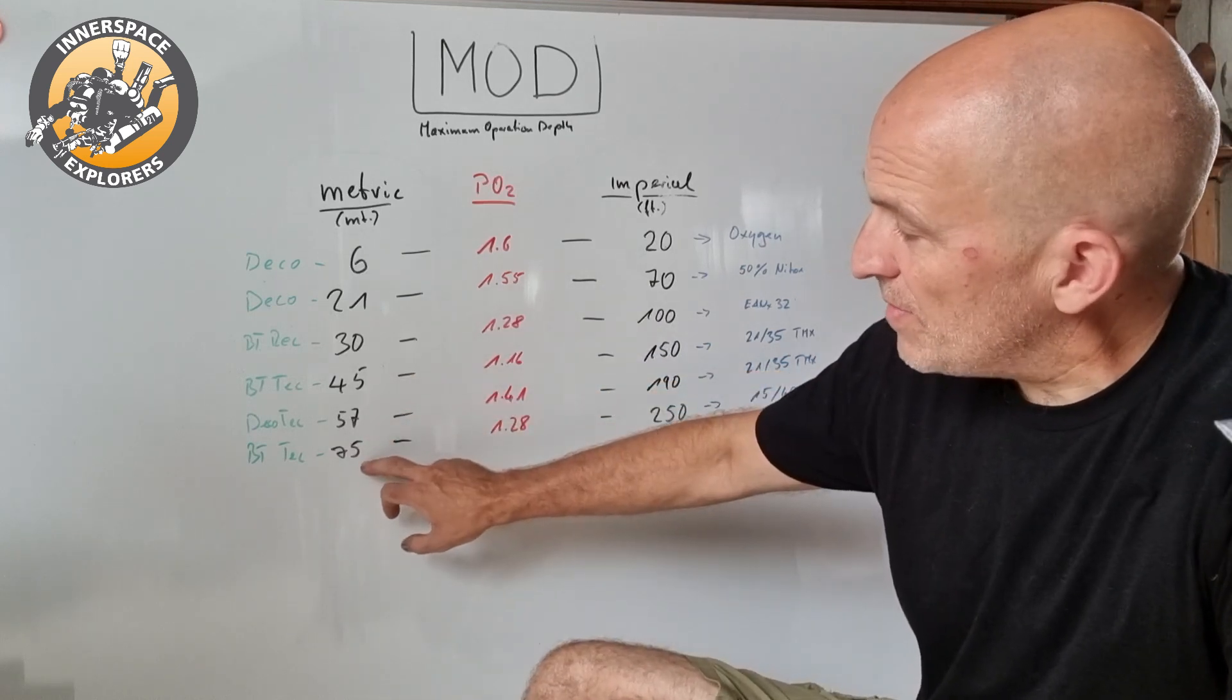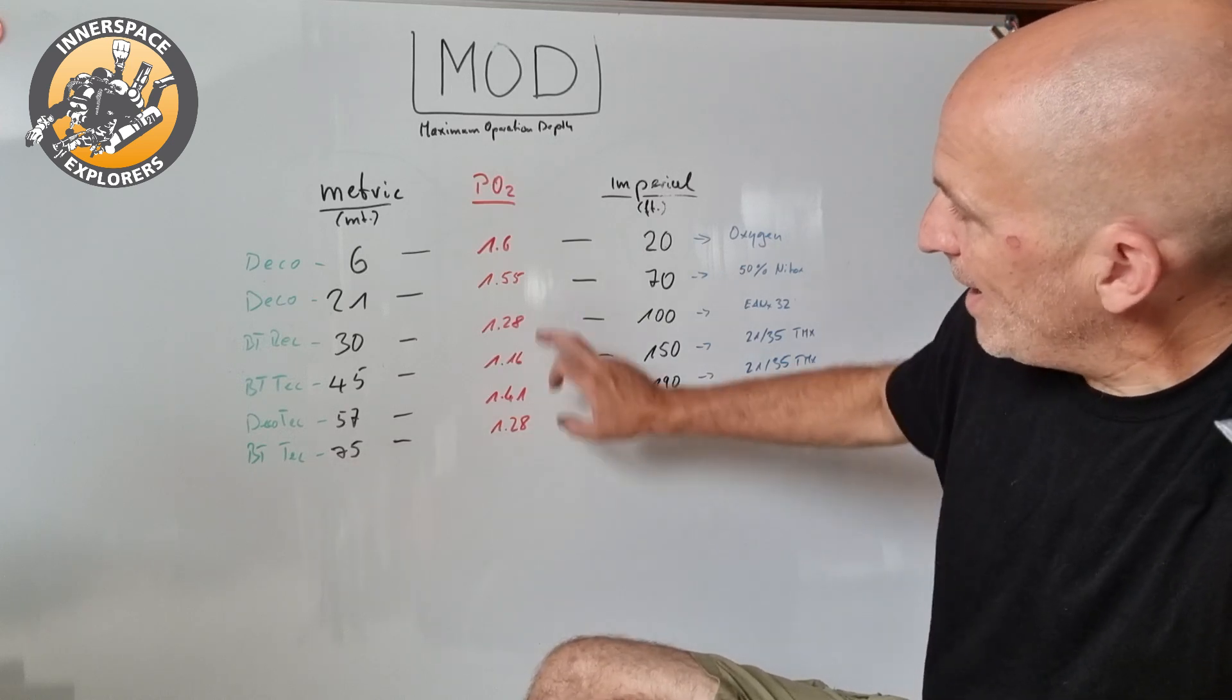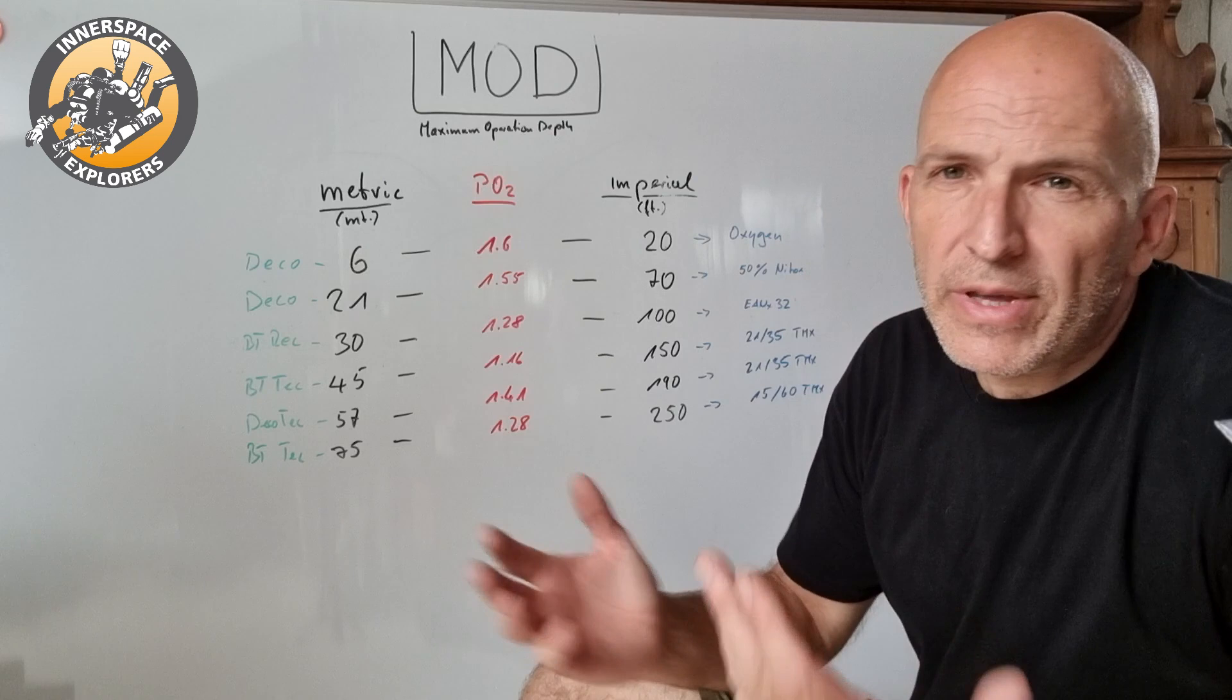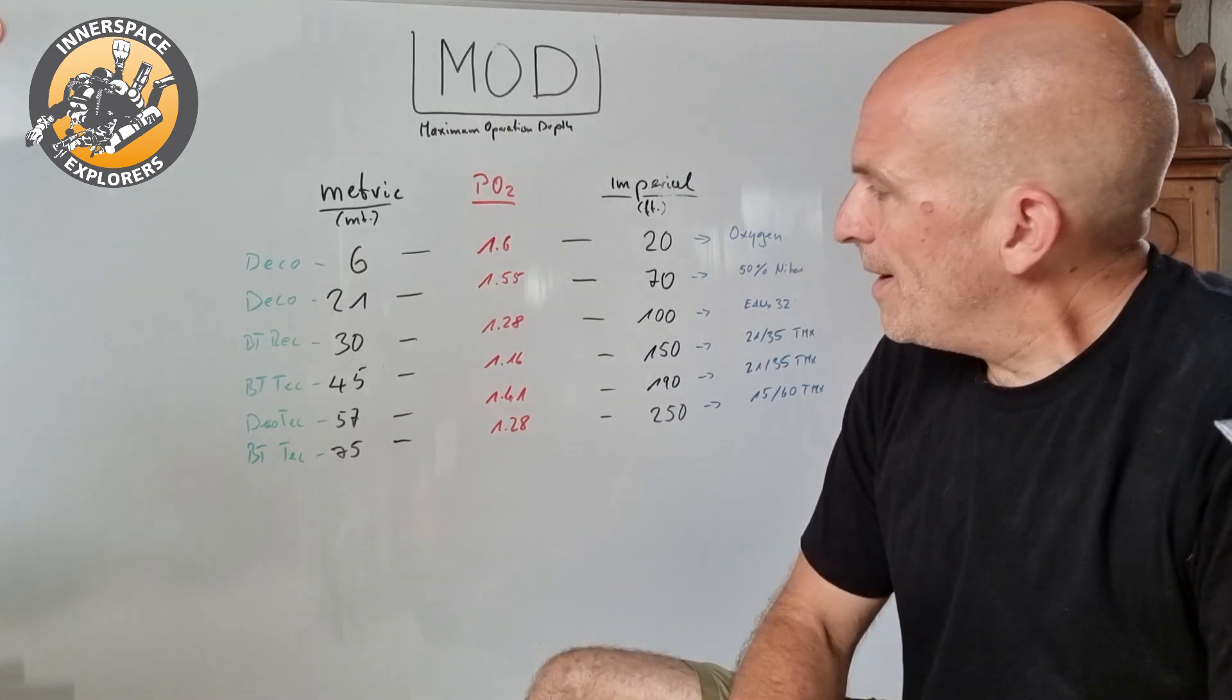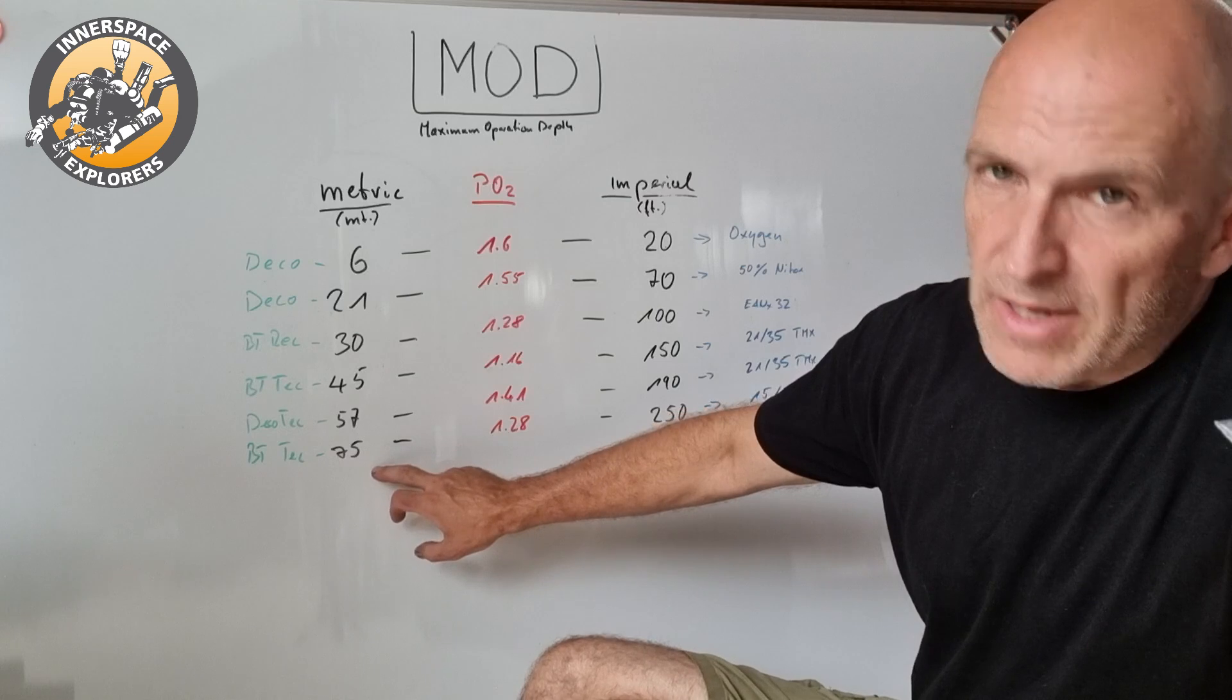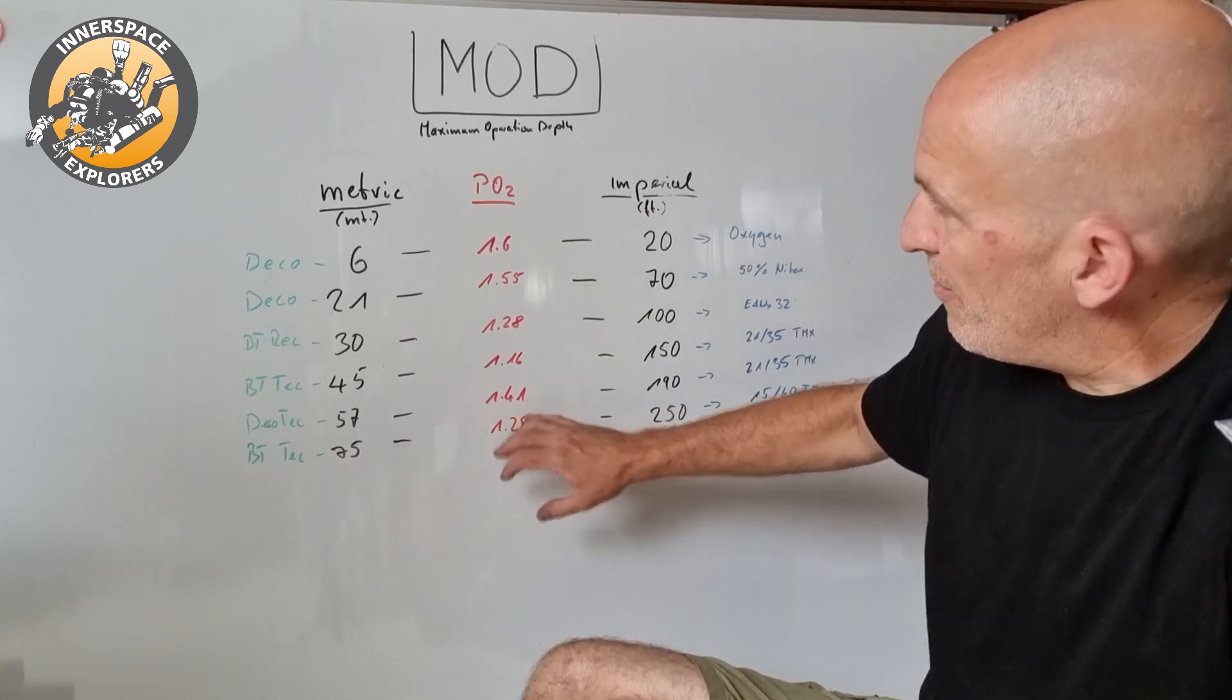The last one is again a bottom gas, maximum depth 75 meters or 250 feet at 1.28. Here again, the rebreather divers would be like, oh yeah, that makes sense, 1.3 is the common PO2 that I'm running my rebreather at.